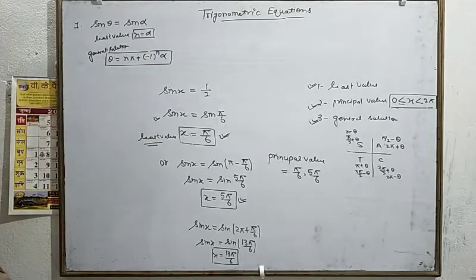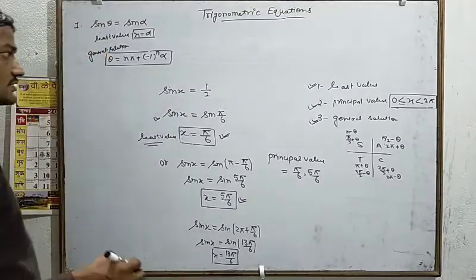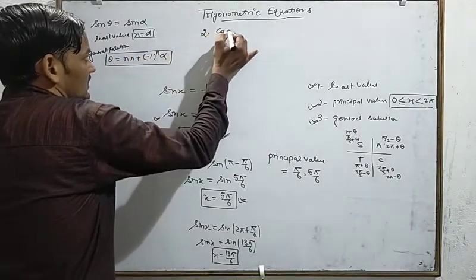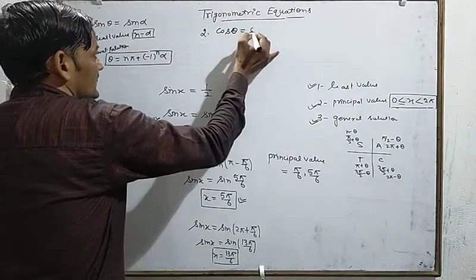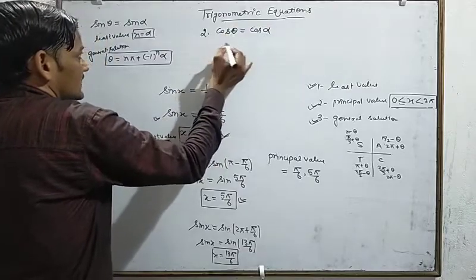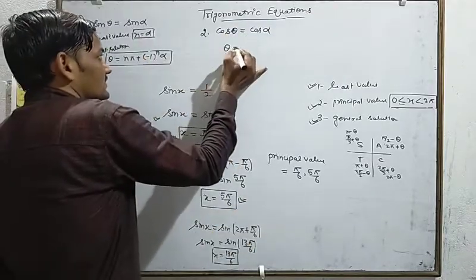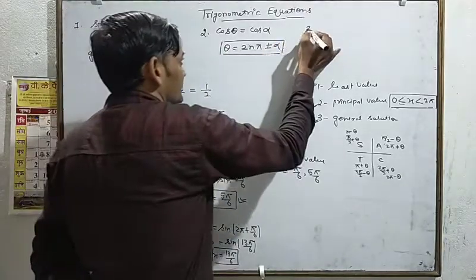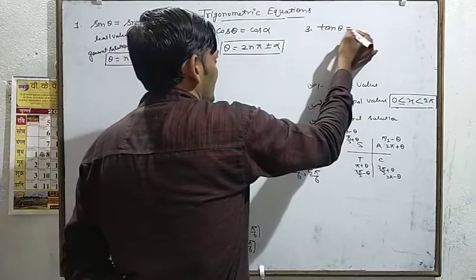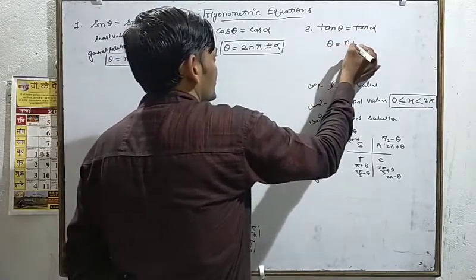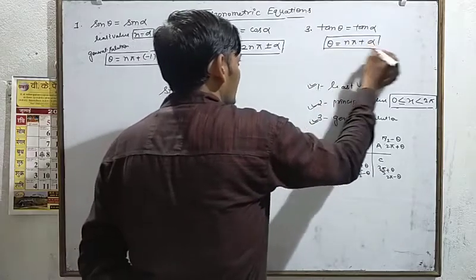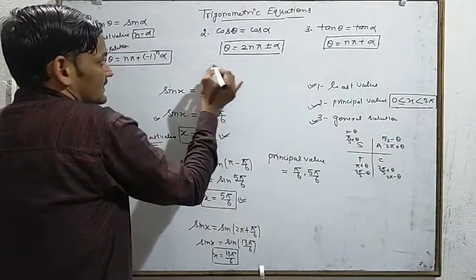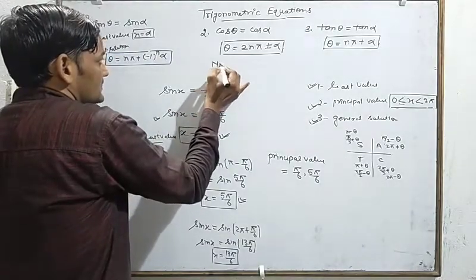When the value is in terms of cosine — if cos theta = cos alpha — then the general solution is theta = 2npi ± alpha. For the third formula: if tan theta = tan alpha, then the general solution is theta = npi + alpha. So these are our three formulas.